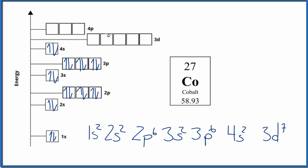we have 3d7. So again, we spread them out first, and then we pair them up. And this is the atomic orbital diagram for cobalt.